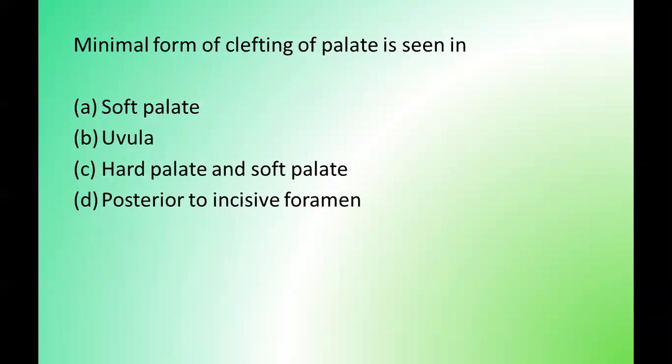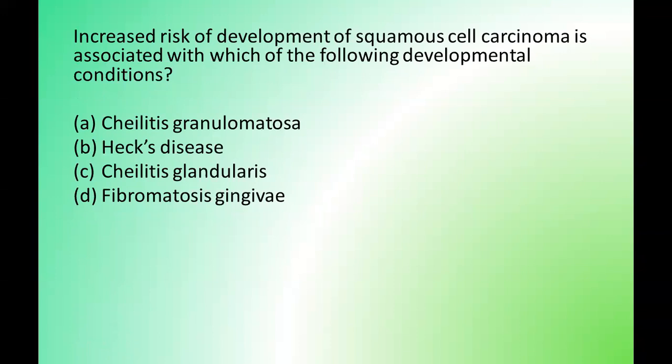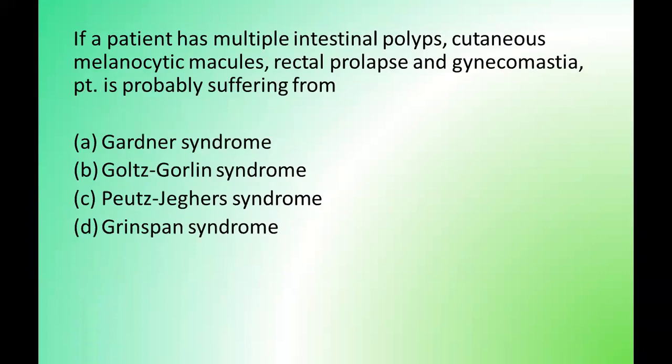Next question: the minimal form of clefting of the palate is seen in which structure? Options are: soft palate, uvula, hard palate and soft palate, posterior to incisive foramen. The correct answer is option B — uvula. Next question: increased risk of development of squamous cell carcinoma is associated with which of the following developmental conditions? Options are: cheilitis granulomatosa, heck's disease, cheilitis glandularis, fibromatosis gingiva. The correct answer is option C — cheilitis glandularis.